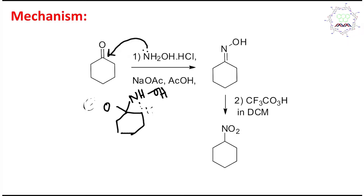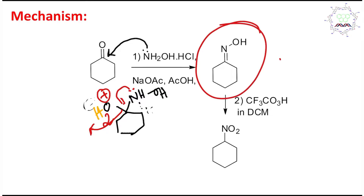In the next step, neutralization happens — hydrogen transfers. The sodium acetate/acetic acid buffer is slightly acidic, so the OH gets protonated to OH₂⁺, and then nitrogen pushes and water leaves. In this way, the hydroxylamine derivative is converted into an imine derivative, which is actually called an oxime.